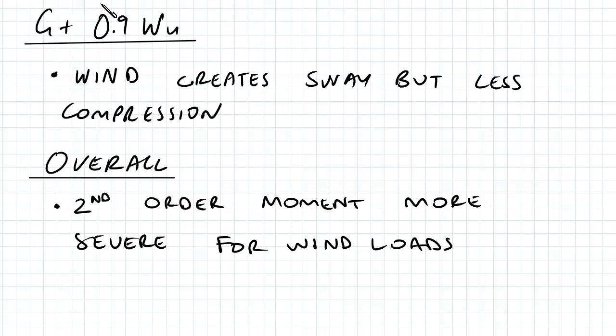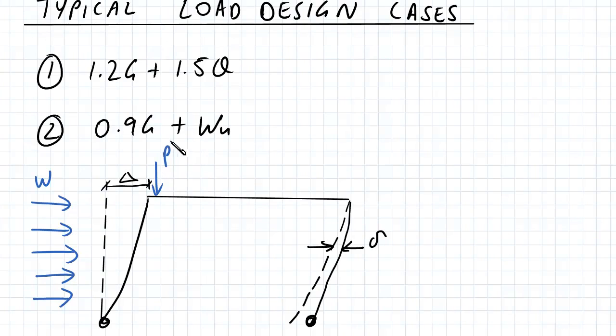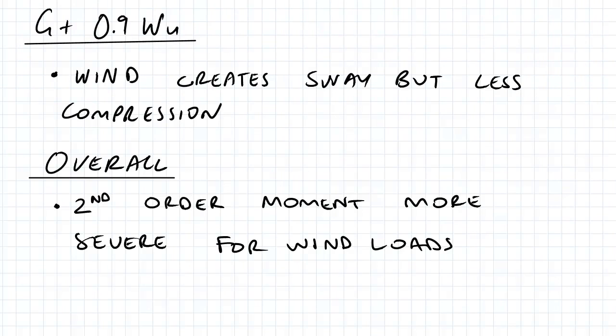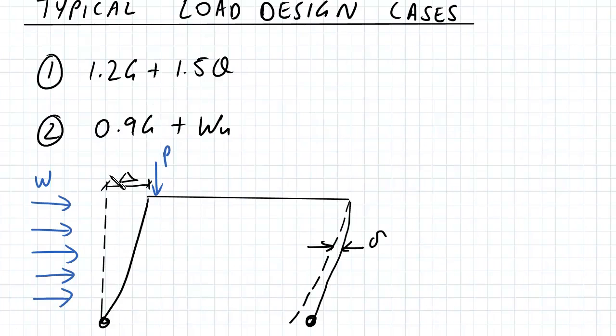The G plus 0.9WU case creates sway but less compression, so the point load, or if you want to call it live load, creates the compression really. Overall, the second order moment is more severe for wind loads, so we can see that here.